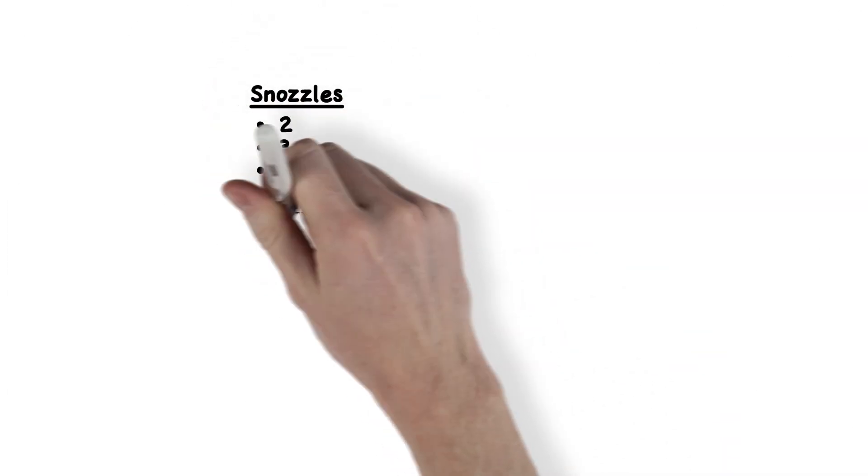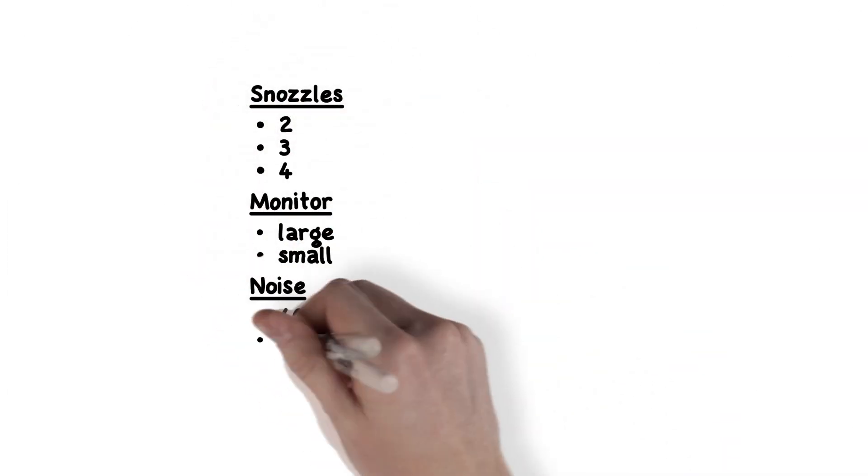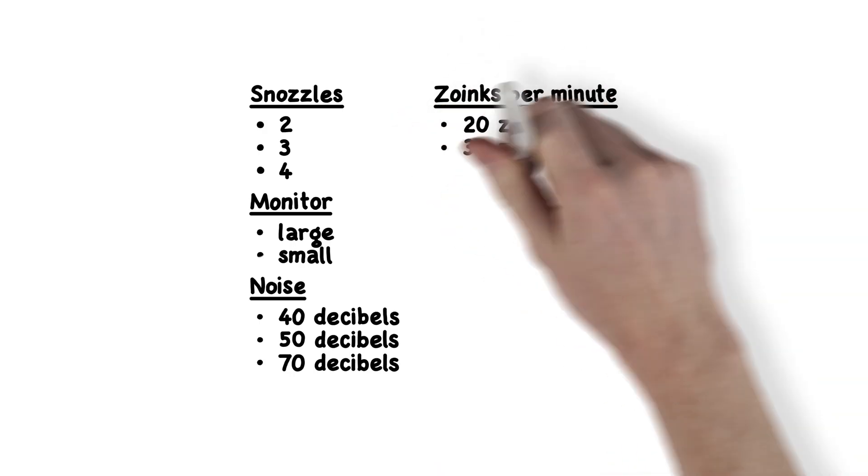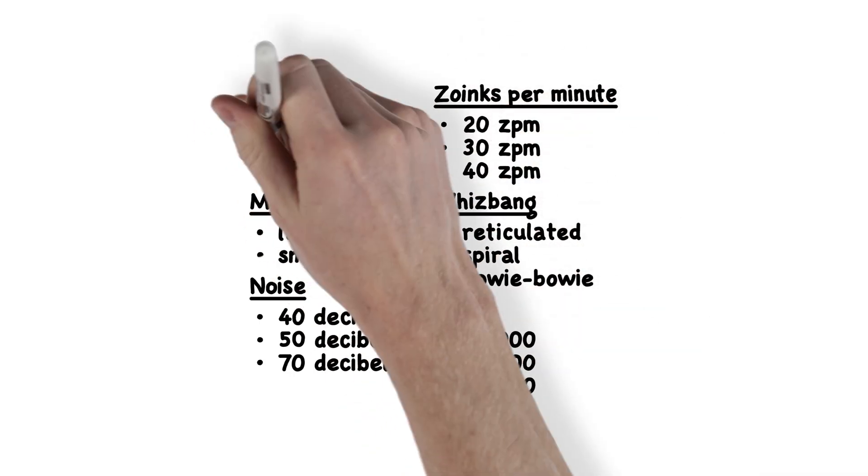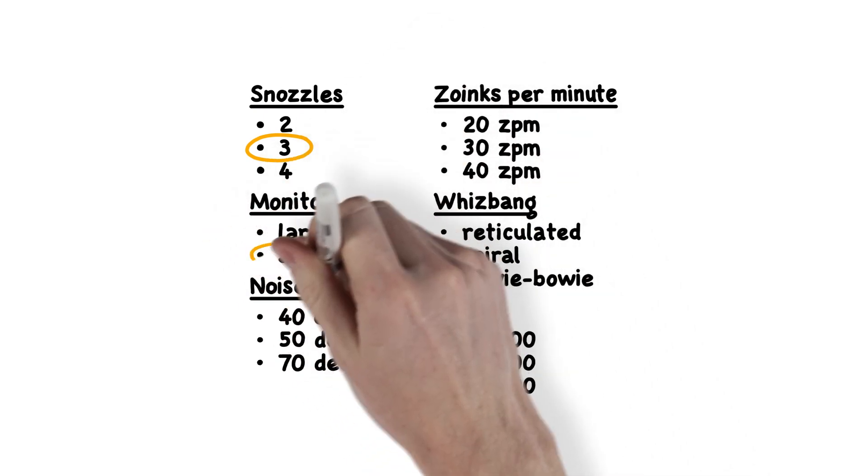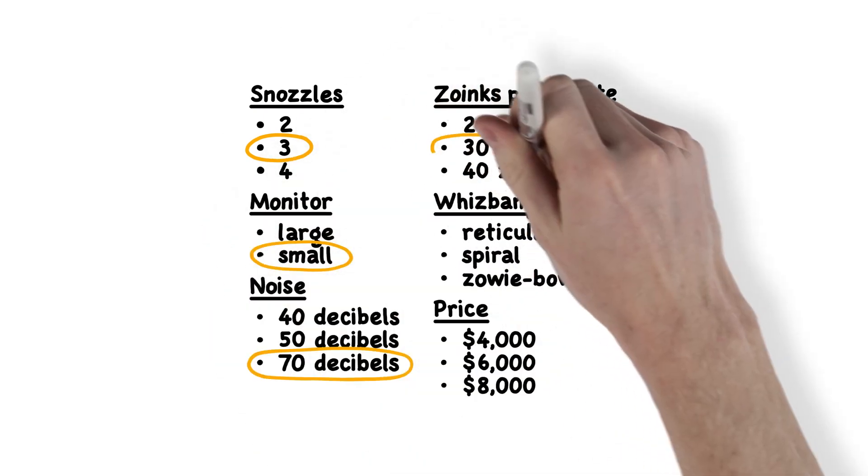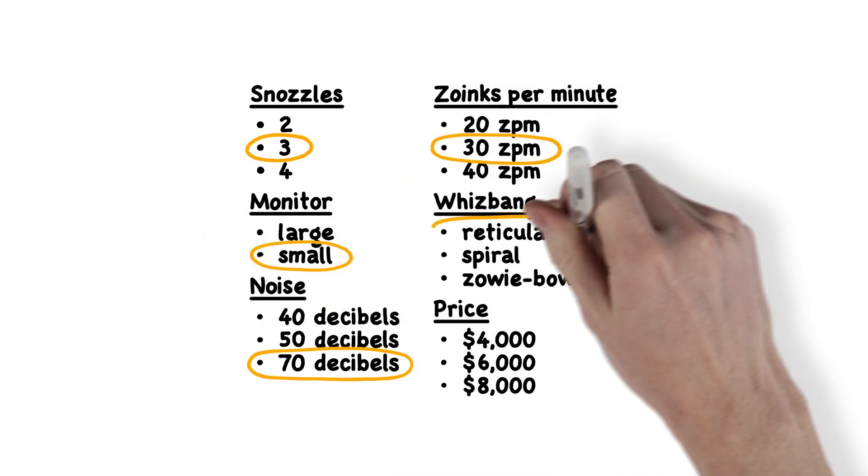To start, Jane does some research so she can list the key attributes and levels of her and her competitors' bazoogles. For example, a bazoogle could have three snozzles, a small monitor, high noise, and shoot out 30 zoinks per minute.